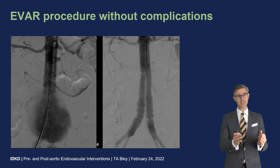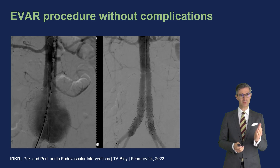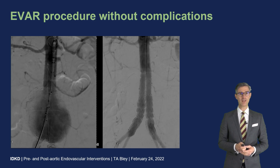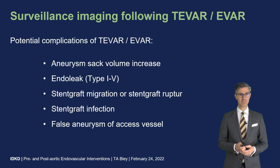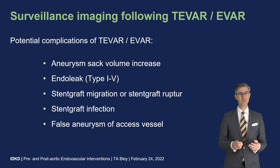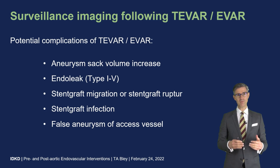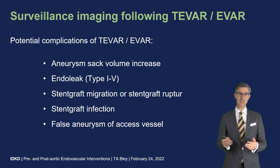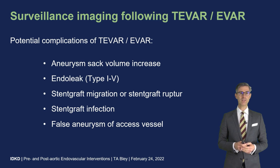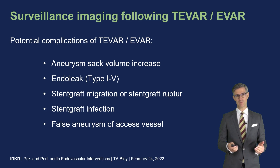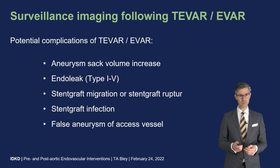In the procedure itself, everything went well. You can see images prior to and post-deployment of the stent graft, occluding the aortic aneurysm. In surveillance imaging after EVAR, we want to assess potential complications, which include aneurysm sac increase, endoleak — which we will discuss in a minute — whether the stent graft has migrated, ruptured, or become infected, and whether there is a false aneurysm in the access vessel. These five points need to be addressed in every surveillance imaging report.